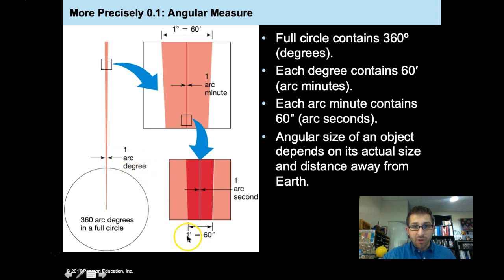All right, and you'll note here, we've got the degrees, 360 degrees in a full circle. Zooming in, we've got each degree is 60 arc minutes. And zooming in even further, each arc minute is 60 arc seconds.